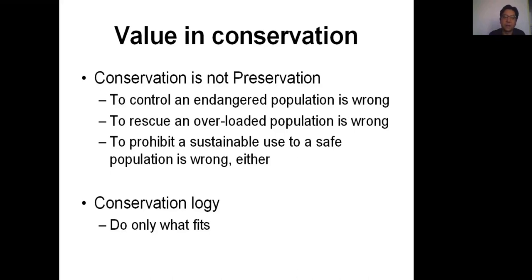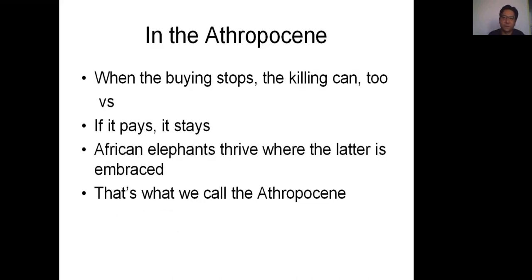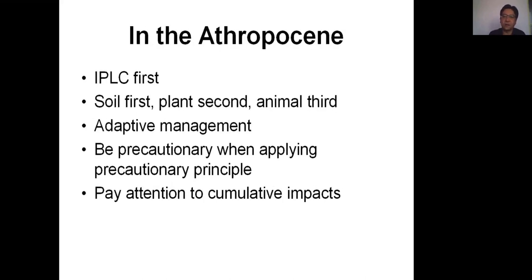This brings us to the conservation logic: do only what fits. In the Anthropocene, there are two major thoughts on the value of wildlife. The first is 'when the ban stops, the killing can continue.' The other is 'if it pays, it stays.' After years of observation, African elephants thrive where the latter is embraced. In the Anthropocene, we must believe that indigenous people and local communities are very important to the future of conservation, especially for large mammal species like African elephants.